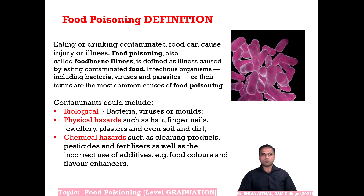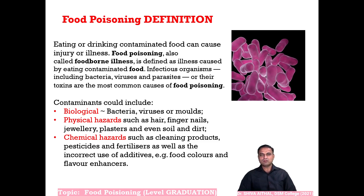Food poisoning can include contamination by bacteria, viruses, and parasites. The toxins secreted by bacteria or infectious agents are the most common causes. Food poisoning can be categorized into three areas: physical food poisoning (physical hazards), chemical hazards, and biological hazards.